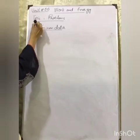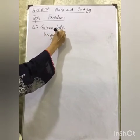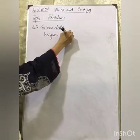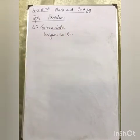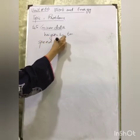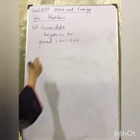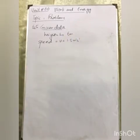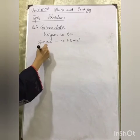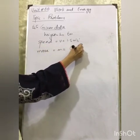Problem 6.5. We have height H equal to 6 meters, speed of the cyclist equal to 1.5 meters per second, and mass of the cyclist M equal to 40 kg.